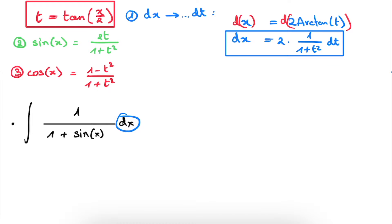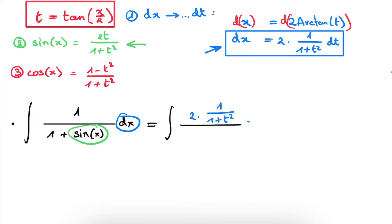We simply rewrite dx with what we found, and rewrite the sine of x with what we found. Our integral becomes: in the numerator, 2 times 1 over 1 plus T squared dt, which rewrites dx; in the denominator, 1 plus the sine of x rewritten as 2T divided by 1 plus T squared. We have now rewritten our integral with goniometric functions as an integral without any goniometric functions — it is now just a rational function of a single variable T.